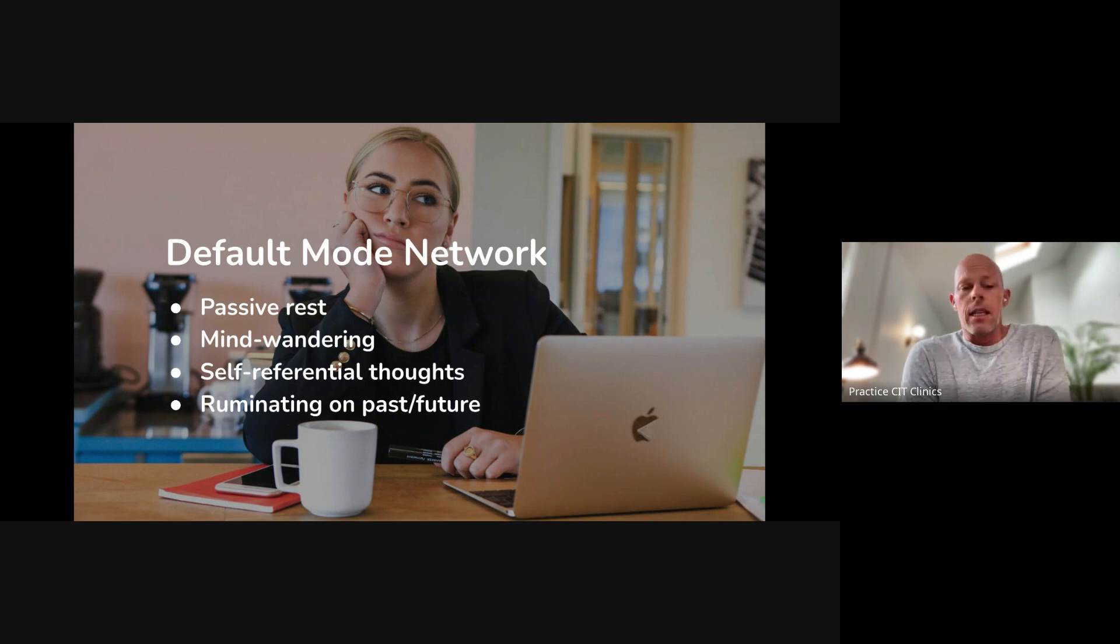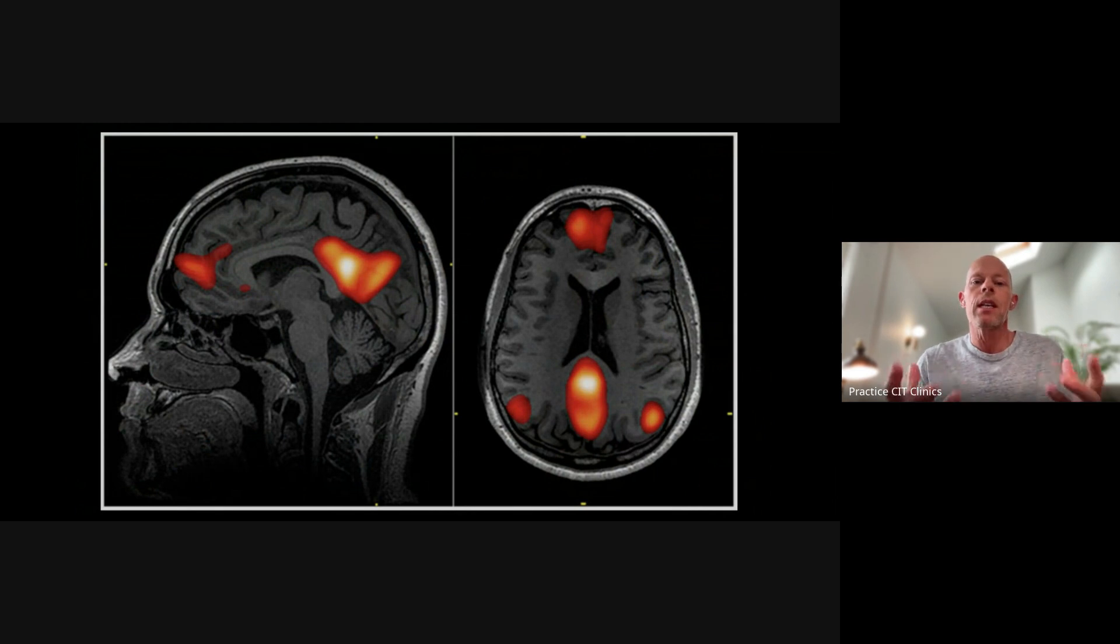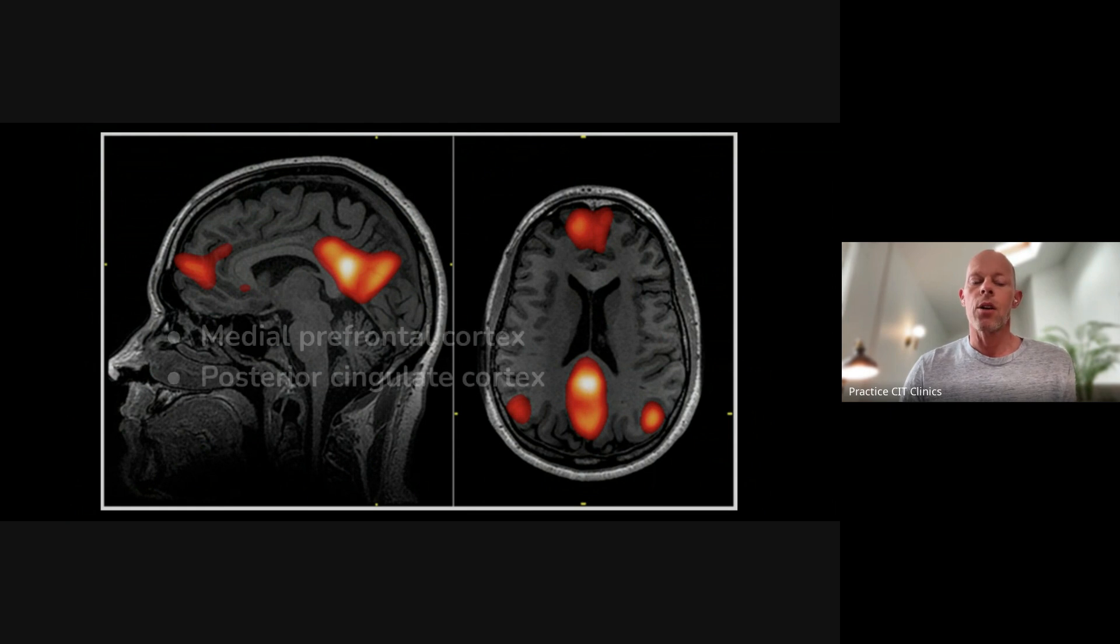And the default mode network is actually something that was discovered when people were doing research using fMRIs. And ironically, specifically wanting to test certain targeted cognitive tasks. So while the patient or the subject is in the fMRI and they're waiting for the experiment to get set up, there was this pattern that the neurologists started noticing, which is, my gosh, look at this. These brain regions, when people are just sitting there waiting, not doing anything specific, there are certain brain regions that are really active.